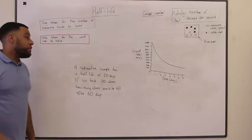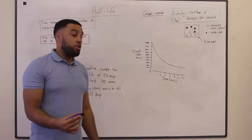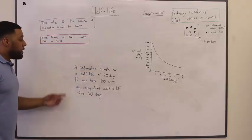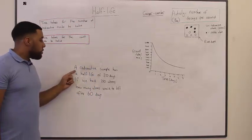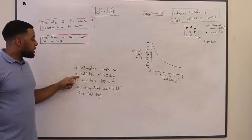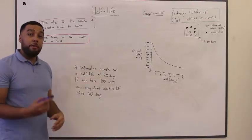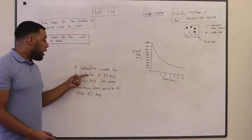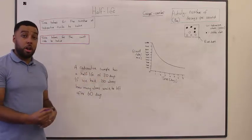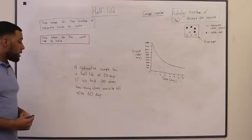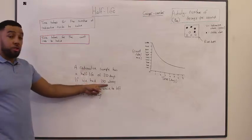Let me give you guys an example of a question that you may face. It says a radioactive sample has a half-life of twenty days. So, every twenty days, half of the radioactive atoms are decaying. If we had a hundred atoms, how many radioactive atoms would be left after sixty days?